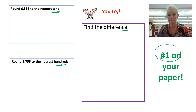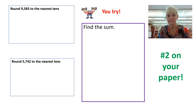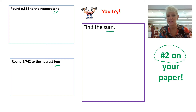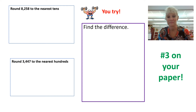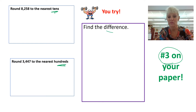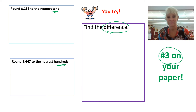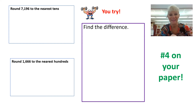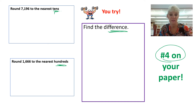You're on number two: round to the tens, round to the tens again, and find the sum. Record that on your paper and pause. Number three: round to the tens, round to the hundreds, find the difference — make sure you do all three. And for the last one: round to the tens, round to the hundreds, and find the difference. Record all that information on your sheet of paper as well.